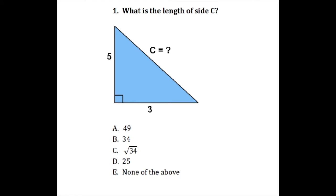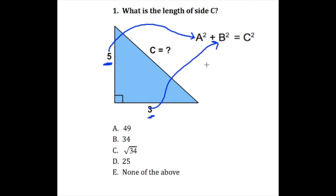Now we're going to look at an example problem. The question is asking us: what is the length of side C? On the test it might be in inches, centimeters, or meters, but for our purposes here we just want to get the basics down. To find the length of side C, since we have a right triangle, we're going to bring in our Pythagorean theorem. For side A we can use the value 5, and for side B we can use 3. So we're going to plug 5 in for A and 3 in for B. So we would do 5 squared plus 3 squared, and that's going to give us C squared.